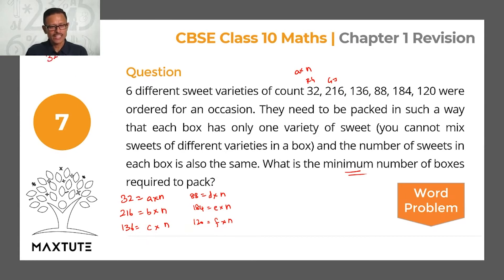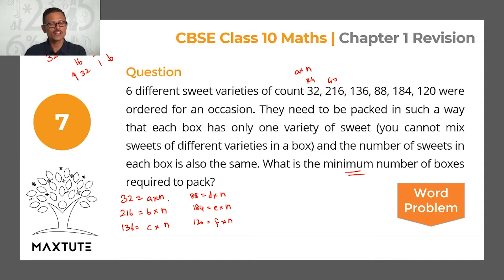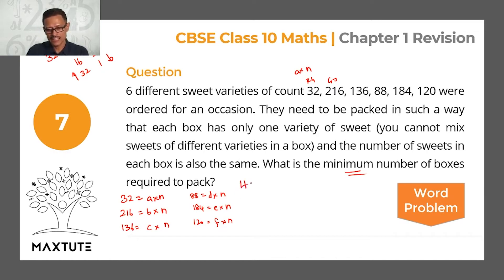Now hold on for a minute. There are 32 sweets. Can I pack it as 4 sweets in a box? 4 into 8 is a possibility. I can do 16 sweets in a box and have 2 boxes. I can pack 32 sweets in a box and have 1 box. As the number of sweets in the box increases, the number of boxes will go down. We're looking for the minimum number of boxes, which means we need to find the largest number of sweets that can go into each box. We realized N is a factor of all of these numbers, and we need N to be as high a value as possible. N is a common factor to these numbers. If N takes its highest value, then N is equal to the HCF of all of these numbers.